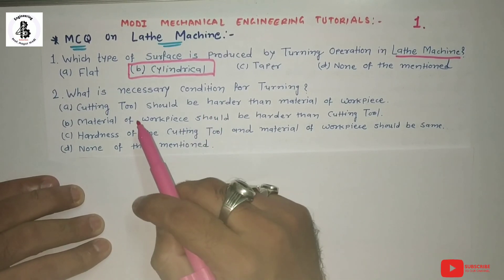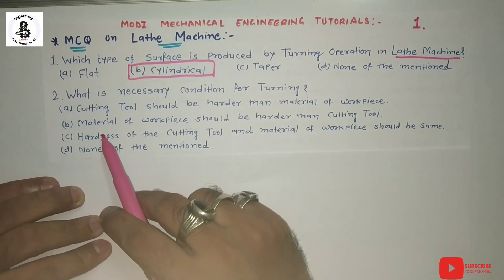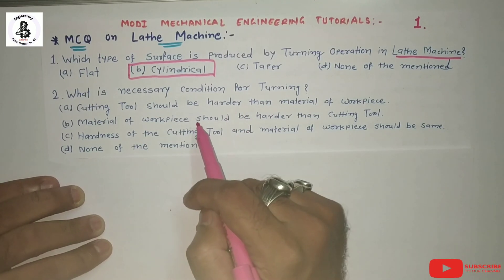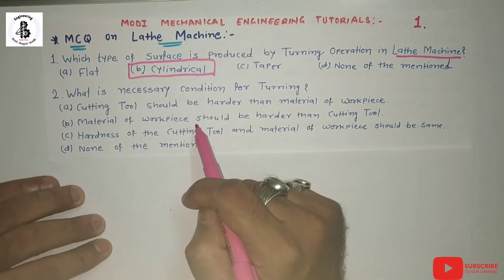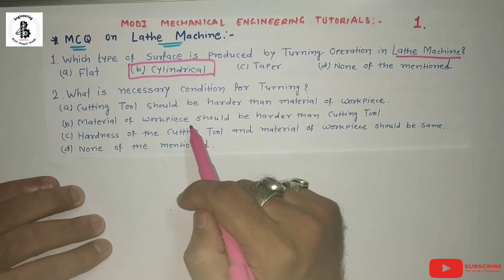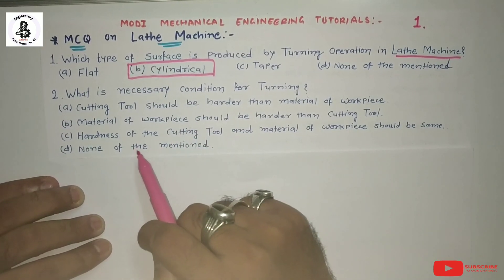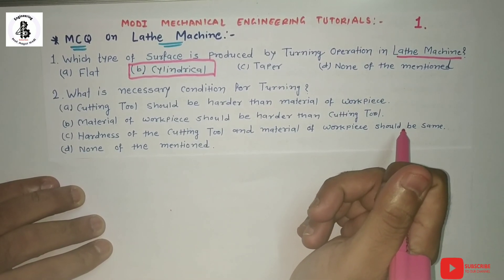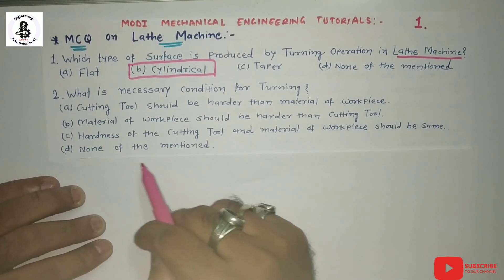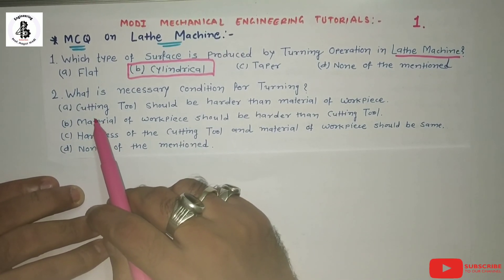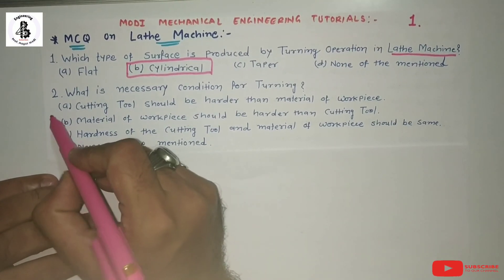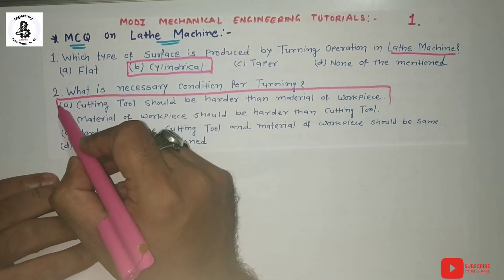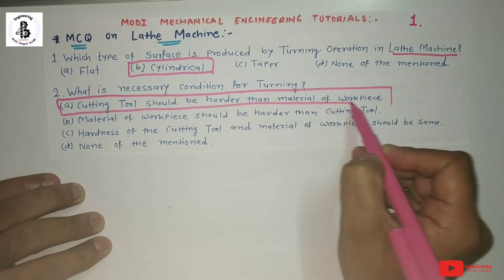Option B: the material of the workpiece should be harder than the cutting tool — that is never possible, because in that case the tool is worn out and there is no metal removal. Option C: hardness of the cutting tool and workpiece should be the same — that is also not the necessary condition. Option D: none of the above. So only option A is correct: the cutting tool must be harder than the workpiece material. That is the necessary condition for turning.